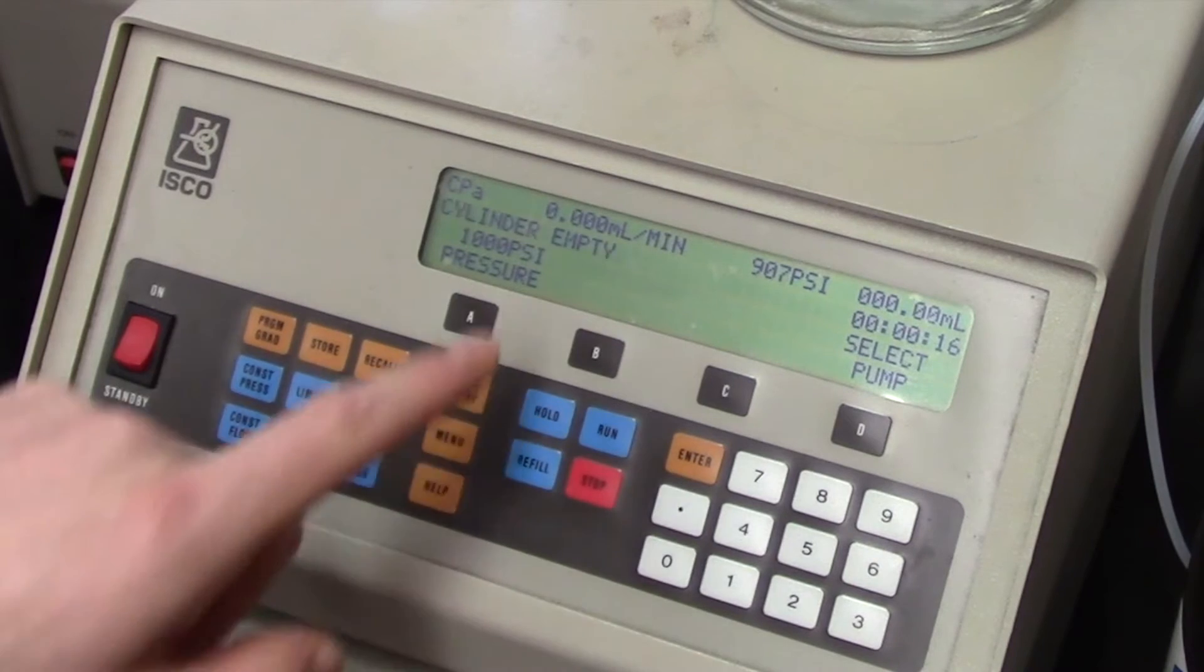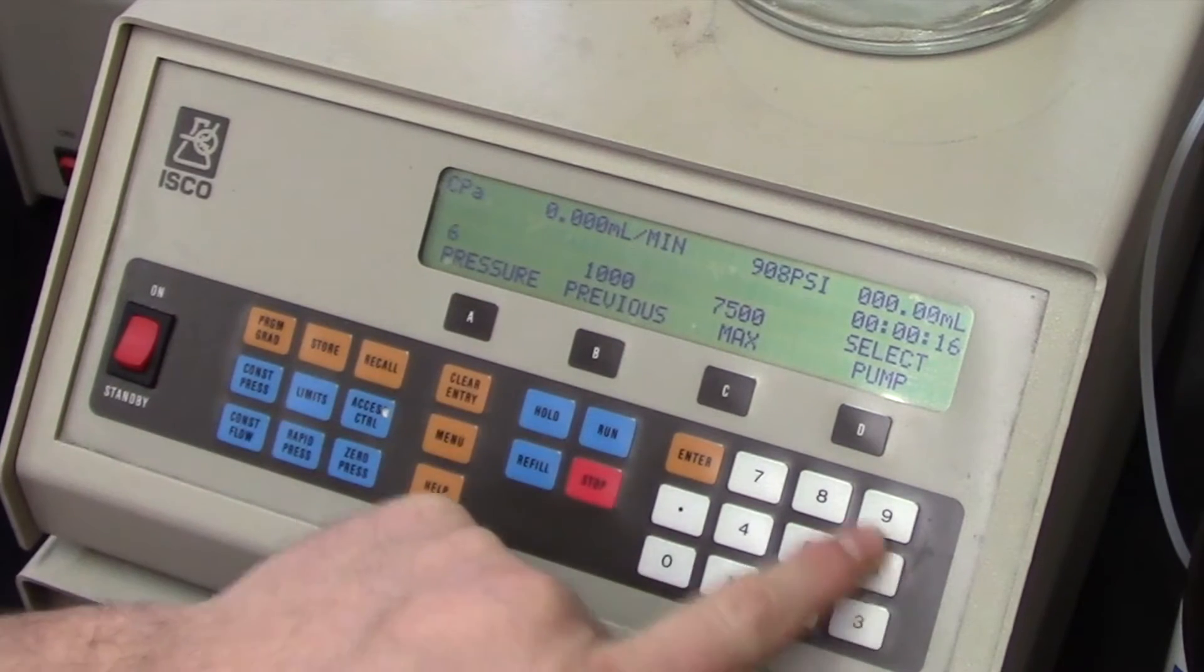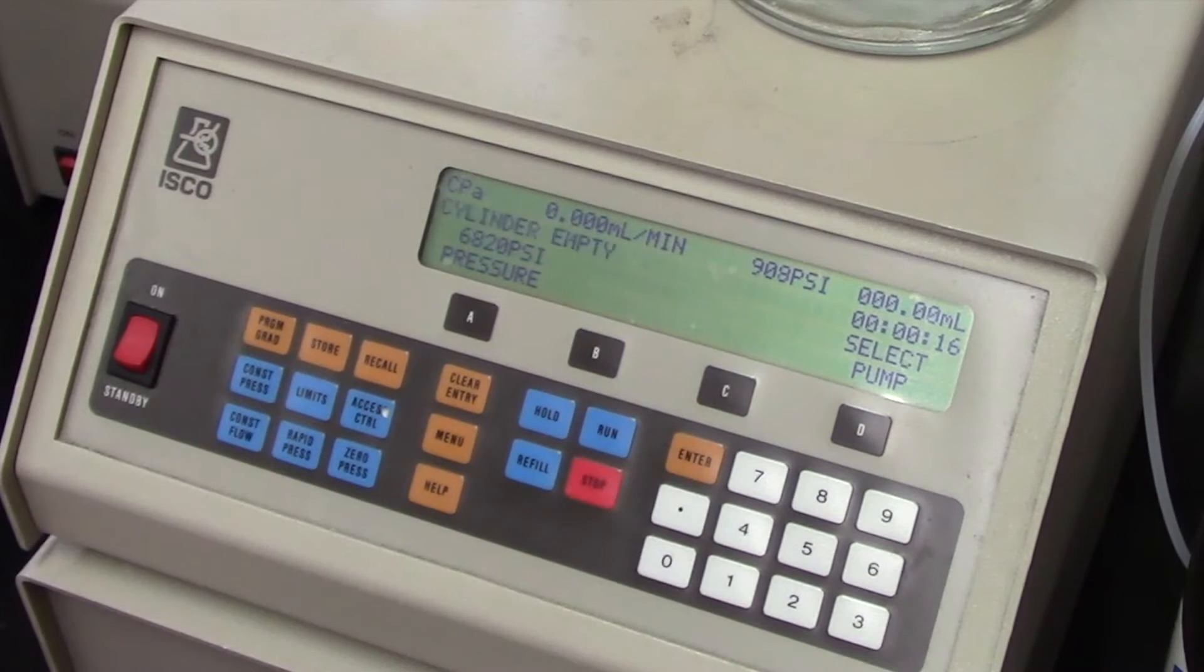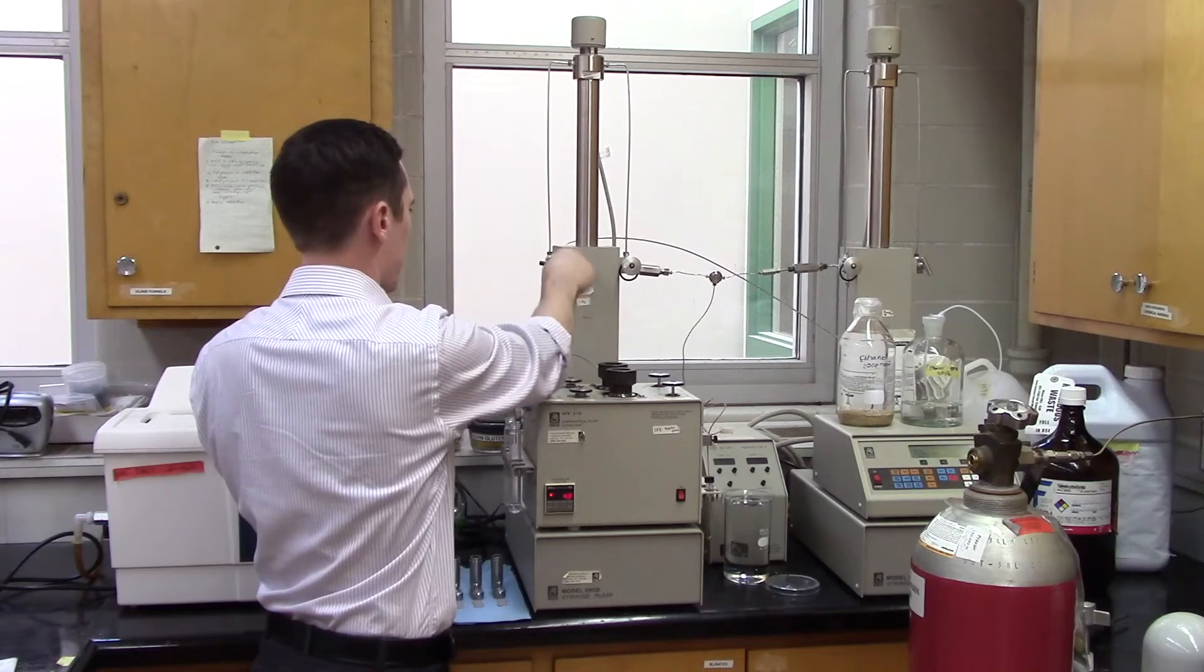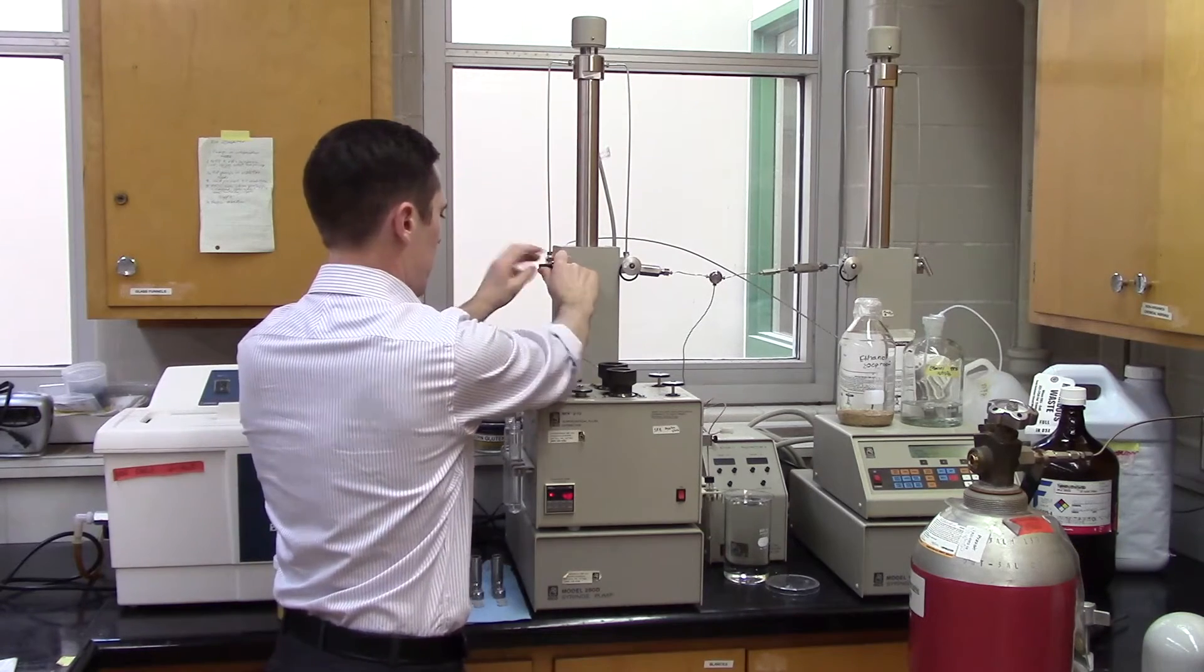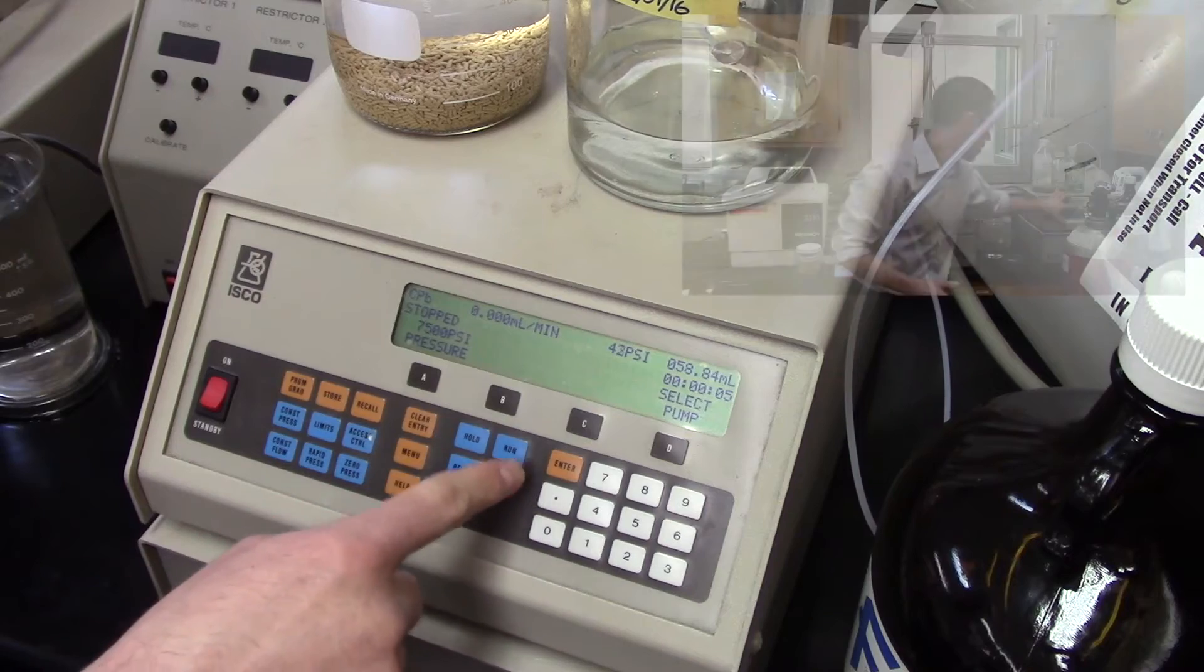To adjust your pressure, simply press the A button underneath where it says pressure, and enter the desired pressure in PSI. Now's the time to go back and double check that all valves are closed. When everything's ready to go, press RUN on the control panel.